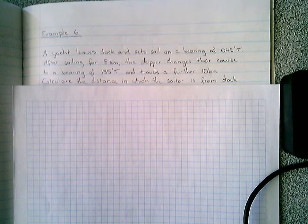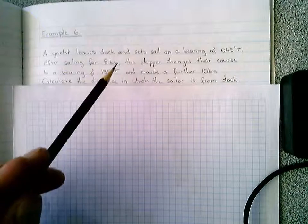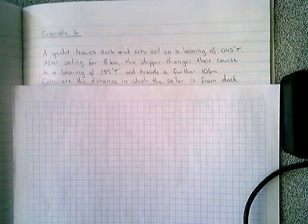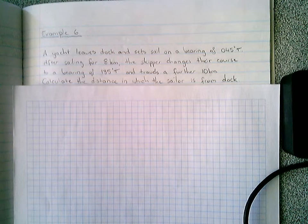A yacht leaves a dock and sets sail on a bearing of 45 degrees true. After sailing for 8 kilometers, the skipper changes their course to a bearing of 135 degrees true and travels a further 10 kilometers. Calculate the distance in which the sailor is from the dock.